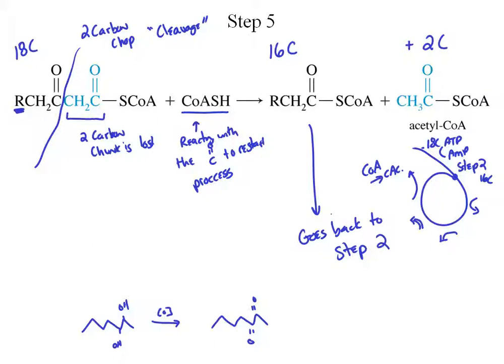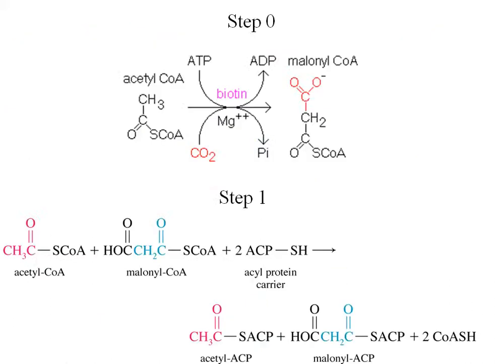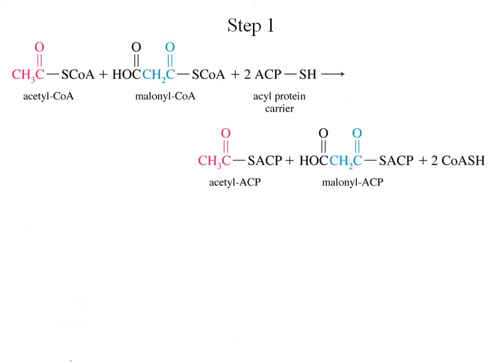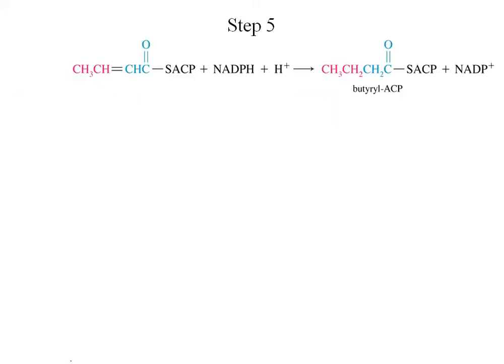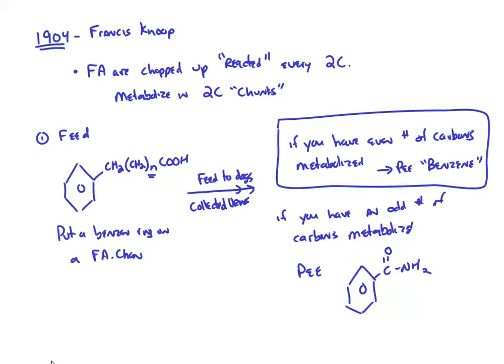What Knoop said in 1904 took 50 years to actually start to prove. Beta-oxidation is a catabolic process — we're going from 18 carbons down to 16 carbons, losing energy. Anabolic is building up; catabolic is breaking down.